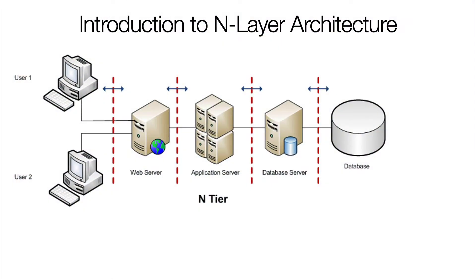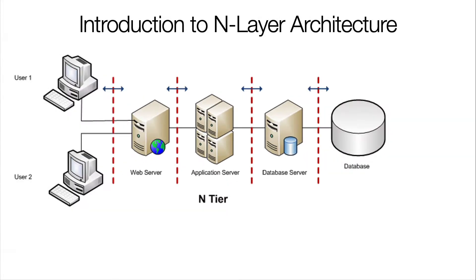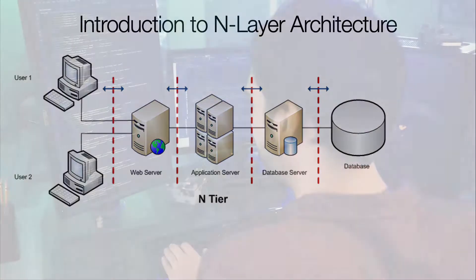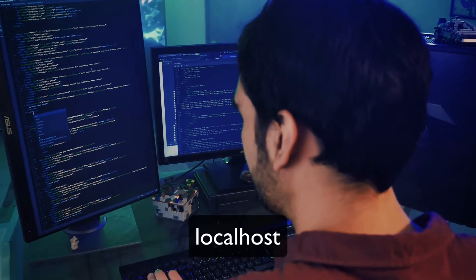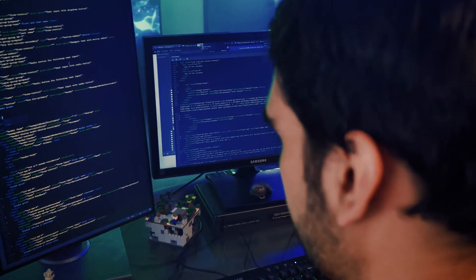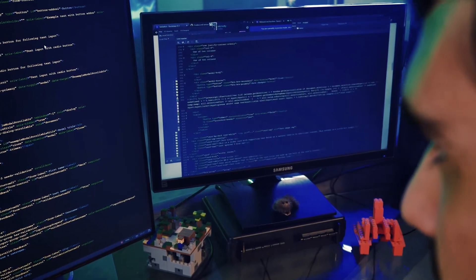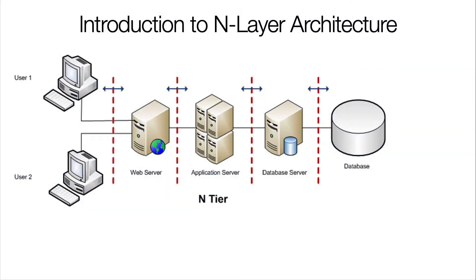This picture here gives a basic idea of what n-layer architecture means. The n means how many layers there are. In this view you can see that this is a three-layer architecture. Notice how many different servers there are. This is a pretty common architecture that you see in many frameworks such as Spring Boot.